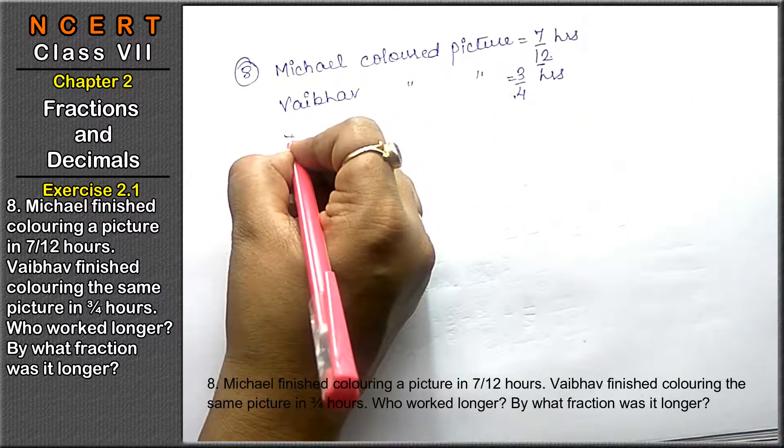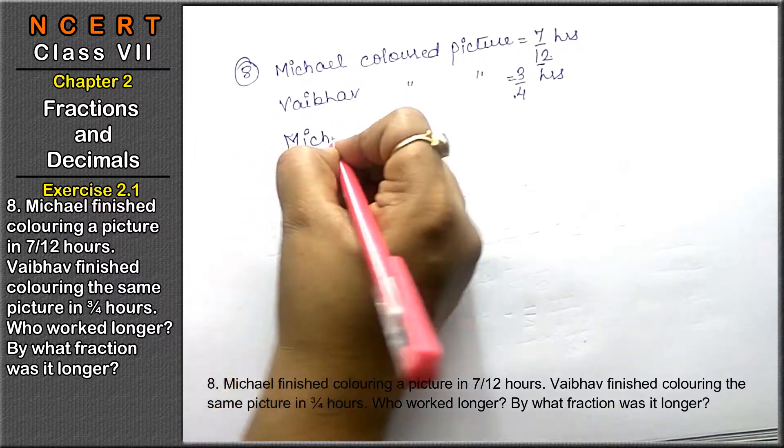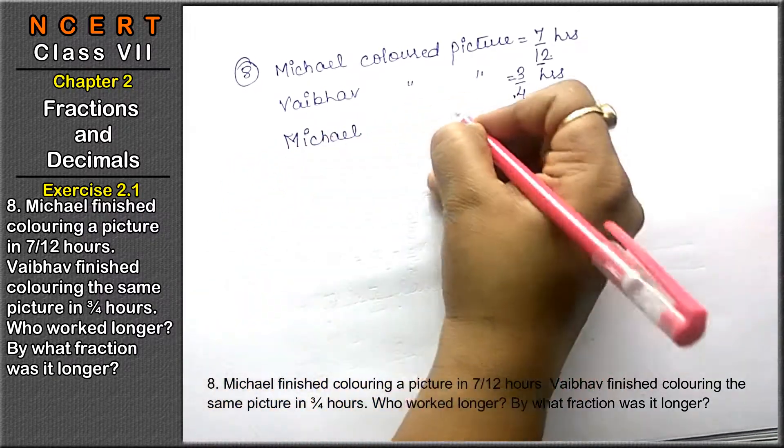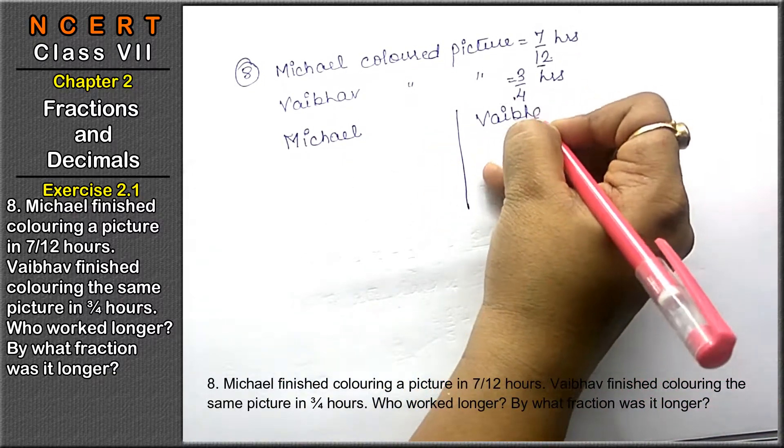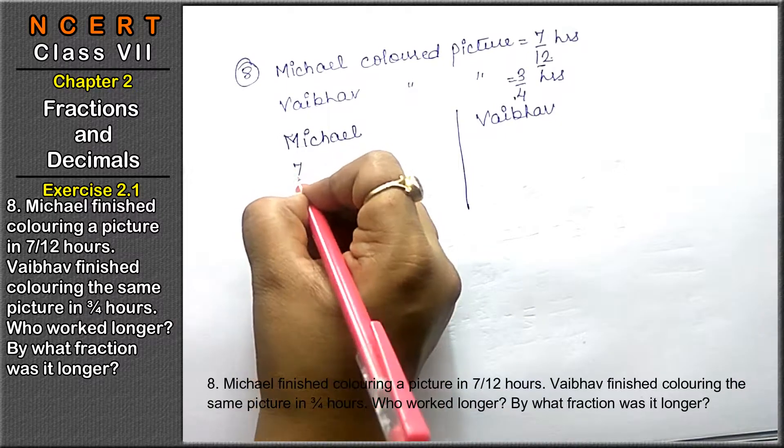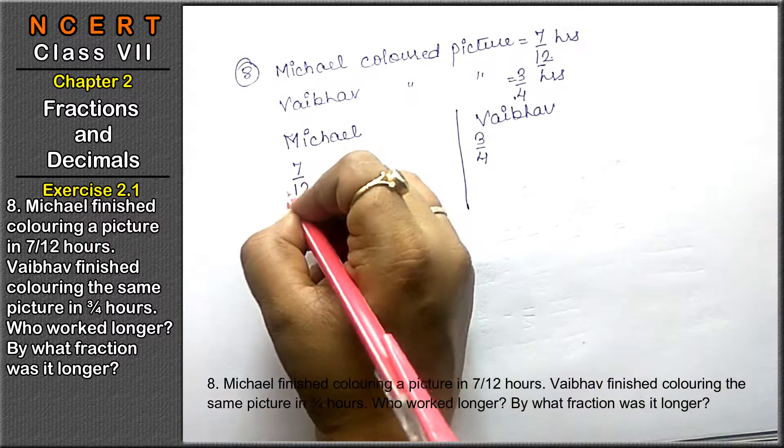We will equalize the denominator. This is Michael's, 7 upon 12. This is Vaibhav's, 3 upon 4.